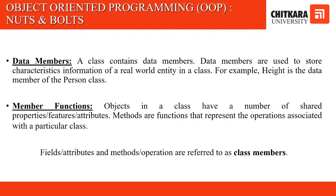Now let us look at the nuts and bolts of object-oriented programming. First are data members — a class contains data members, which are used to store characteristic information of a real-world entity. For example, height is a data member of the Person class. Second are member functions — objects in a class have shared properties, and methods or member functions represent the operations associated with a particular class. For the Person class, walking and talking would be the member functions. Fields, attributes, and methods together are referred to as class members.